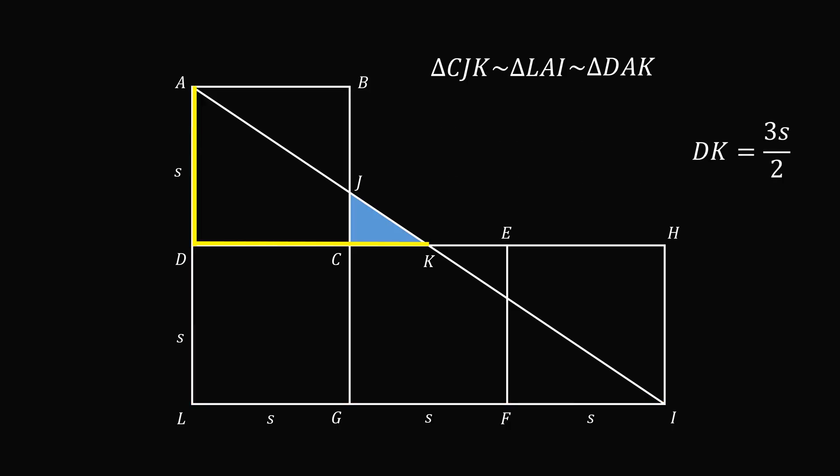But now, we know that DC is equal to S because it's a side length of the square. So we take the length of DK and subtract the length of DC. We get the length of CK. And that means CK is equal to S over 2.